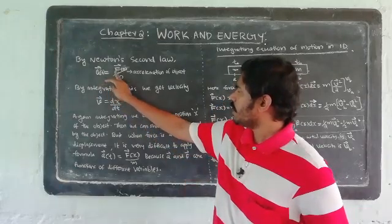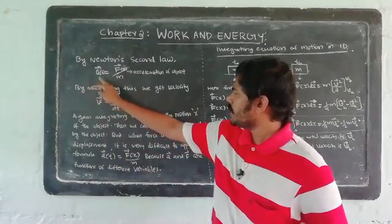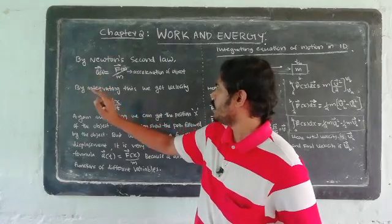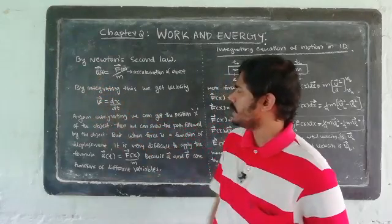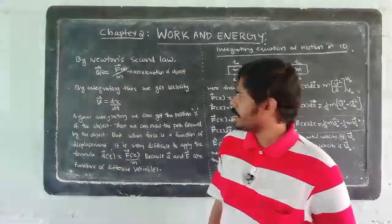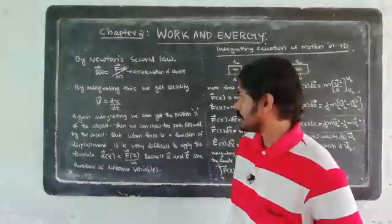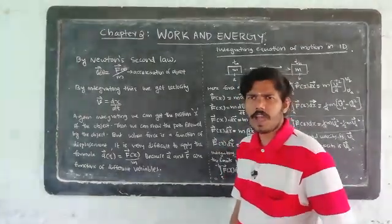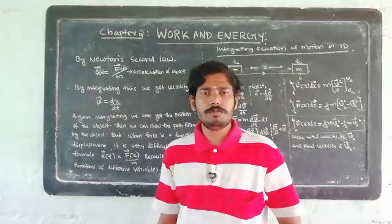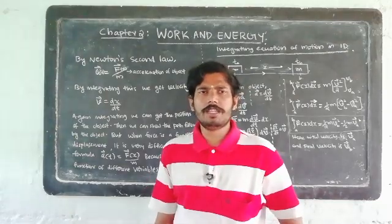Again, by Newton's second law, F equals ma. We can integrate both sides. When acceleration is integrated, we get velocity. Since V equals dx/dt, we can integrate again to get displacement — the position x of the object — and thereby find the trajectory path followed by the object.